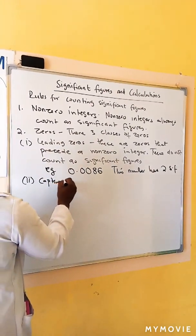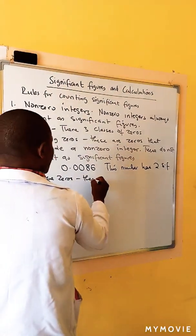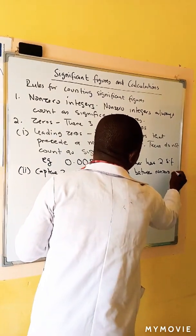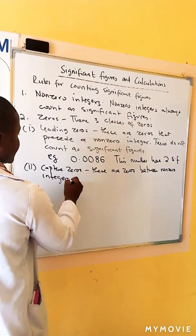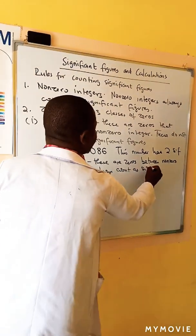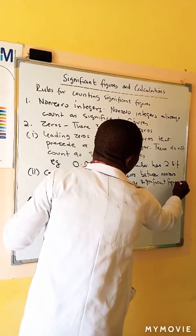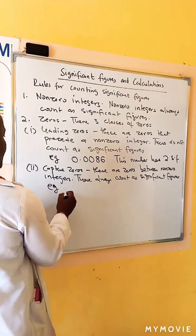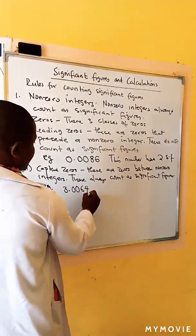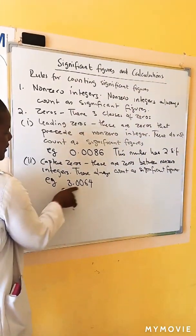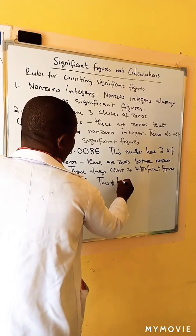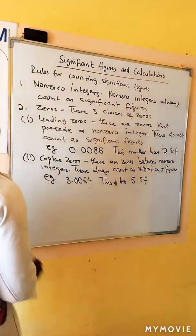Two: captive zeros. These are zeros between non-zero integers. These always count as significant figures. For example, the number 3.0064. These are the captive zeros, so this number has five significant figures.